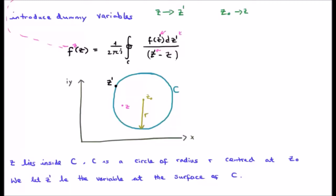Why do we do it? Z lies inside the circle C. C is a circle of radius R, centered at the pole at Z0. We let Z' be a variable at the surface of C.